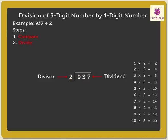Here, we use the table of 2 to find a product which is equal to or less than and nearest to the digit 9. The nearest product is 8. Hence, we write 4 above 9 in the quotient. As we know, 4 into 2 is equal to 8. We write the number 8 in the hundreds column under 9.